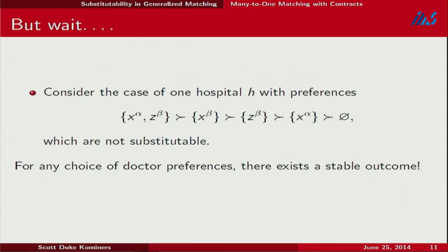The earlier non-substitutable example actually satisfies some of these weaker substitutability conditions, explaining why stable outcomes exist. Let me show a quick argument for why stable outcomes exist. Consider a single hospital. Alpha is a research contract, beta is a clinical contract. I'm going to relabel the doctors as Dr. Sherlock and Dr. Watson, where Sherlock is smarter than Watson.